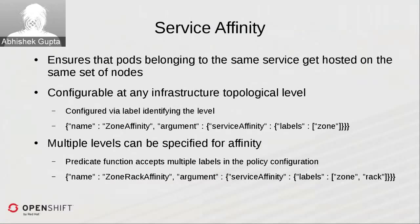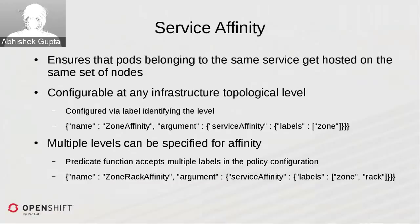For example, a zone affinity takes a label of 'zone', and if your scheduler is configured with this predicate, all pods within a given service will be co-located within the same zone. Multiple levels can be specified for affinity as well. If you define affinity at both the zone and rack level, all pods within the same service will be co-located not only within the same zone but also within the same rack, distributed across different nodes within that rack.